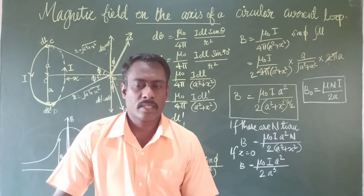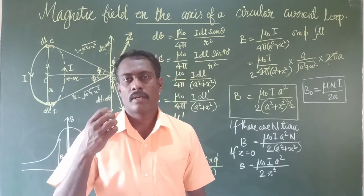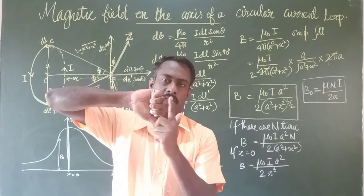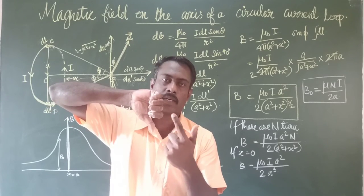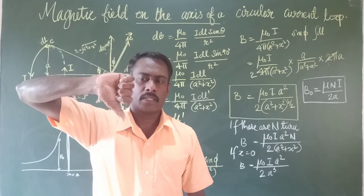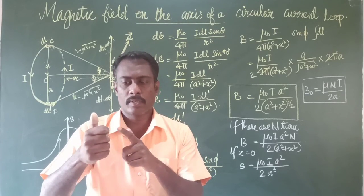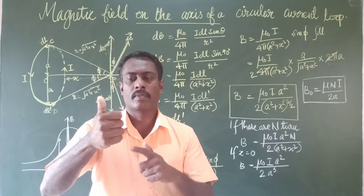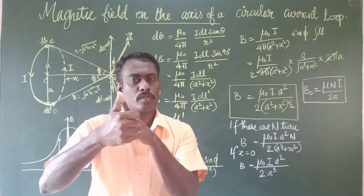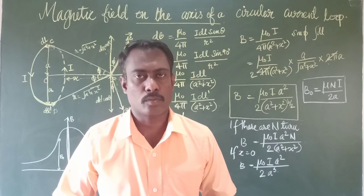The direction of the magnetic field can be described using the right-hand thumb rule. If you hold the current-carrying conductor with your right hand so that the curled fingers encircle the loop in the anti-clockwise direction, the thumb points in the direction of the magnetic field — downward. If the current is clockwise, the thumb points upward. That's all about the magnetic field on the axis of a circular current loop.